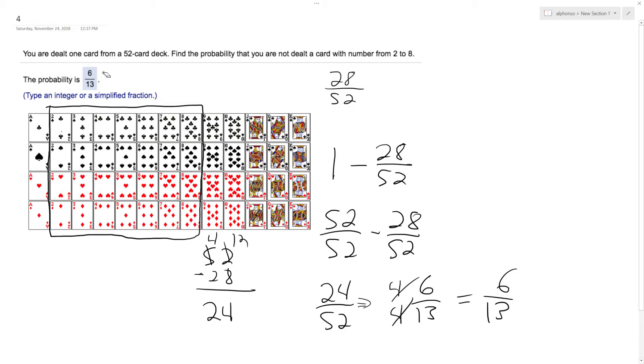Yep, and that matches up with the solution. So anyway, the probability of not being dealt that. You find the probability and then subtract that from all possibilities.